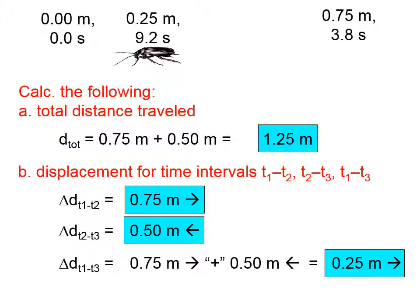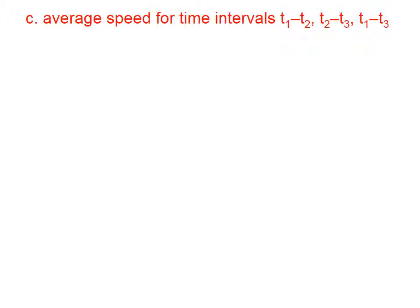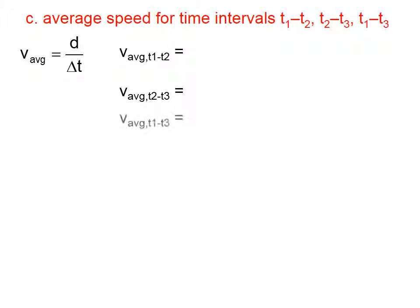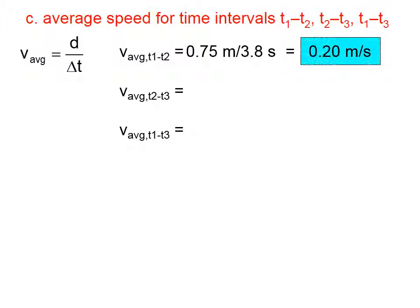Here we're underscoring the difference between distance and displacement. Let's calculate the cockroach's average speed for the various time intervals. Speed is distance over time. Between time intervals 1 and 2, he travels a distance of 0.75 meters and 3.8 seconds elapses — that's 0.2 meters per second.